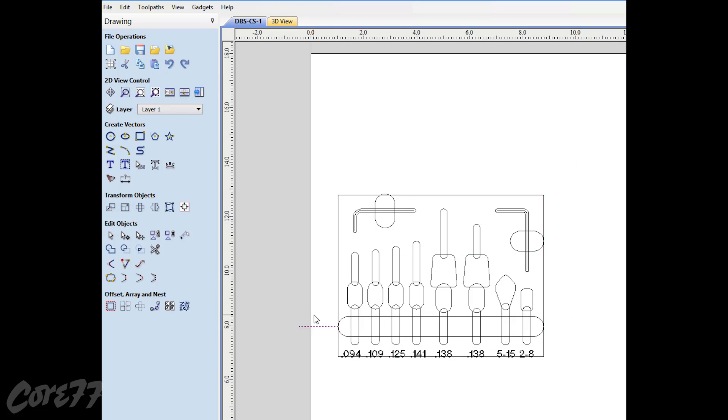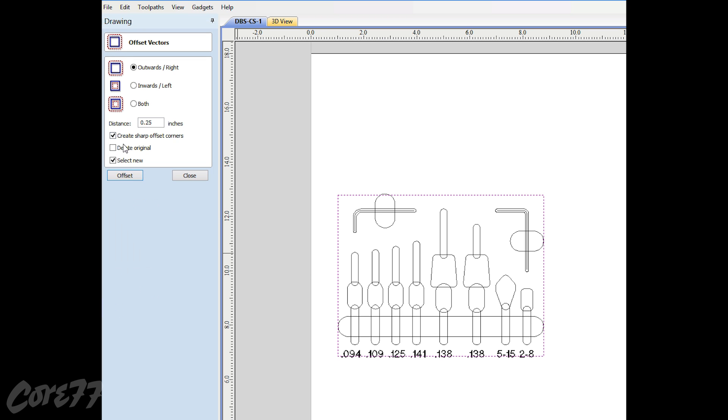Then I took the group with the most components, spaced those all out in the CAD, added about a quarter inch border around it, and now I've got my drawer width.